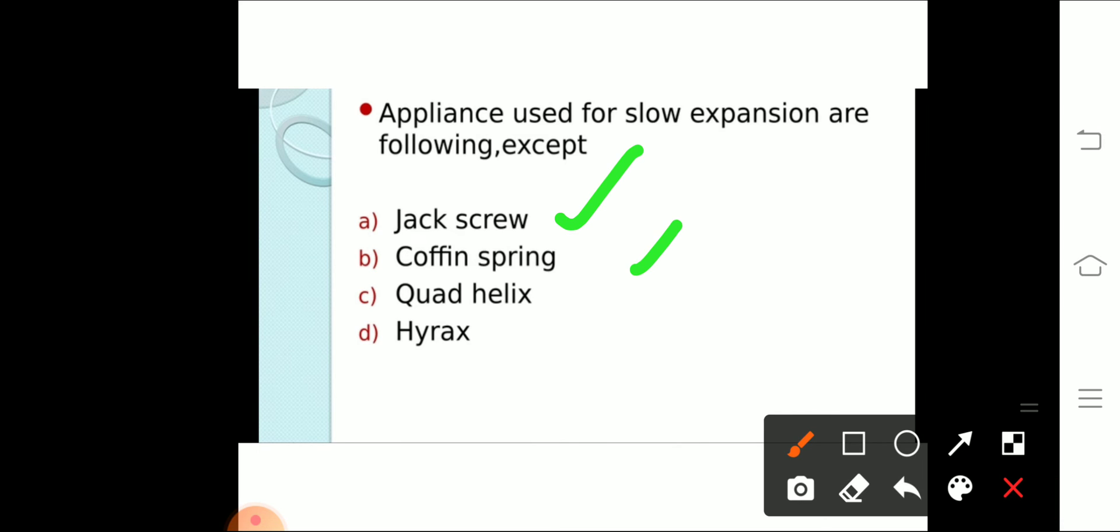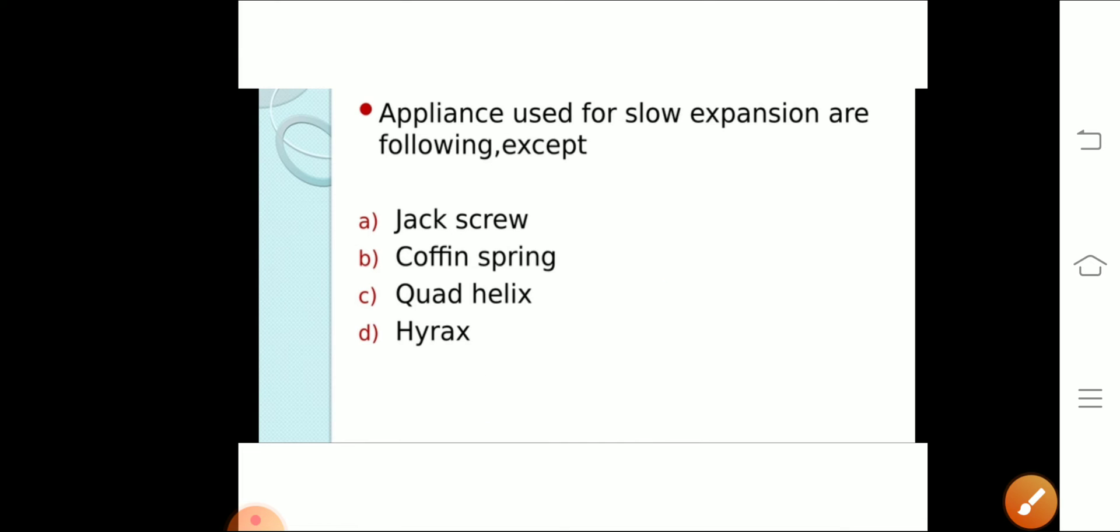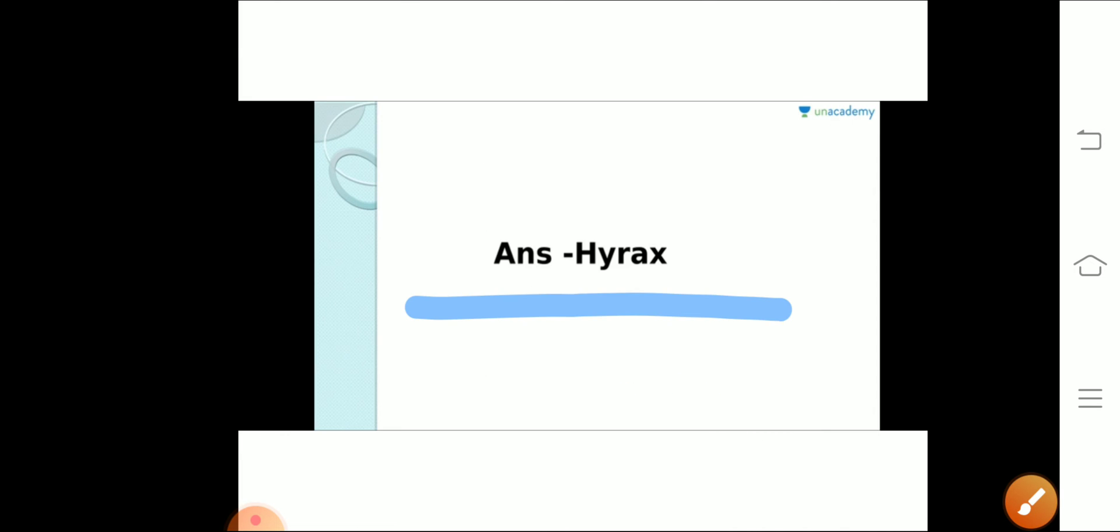Now the question is appliances used for slow expansion are all of the following except: jack screw, yes that's used for slow expansion. Coffin spring, yes. Quad helix, that is also correct. Hyrex. Now Hyrex is not used for slow expansion, that is used for rapid maxillary expansion. So odd one out, D is correct answer here.